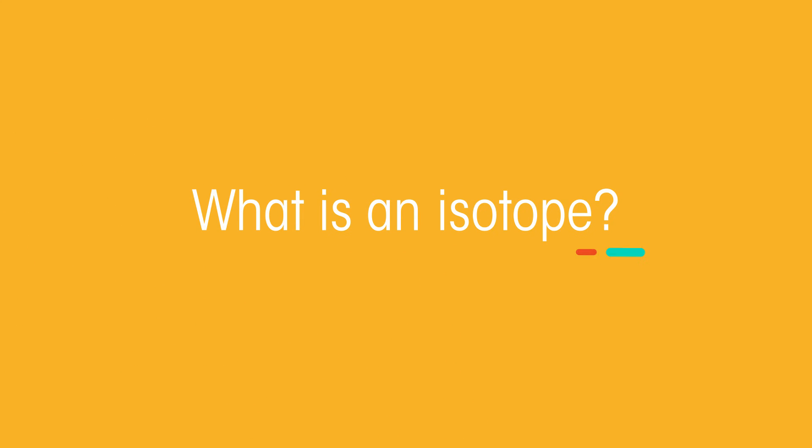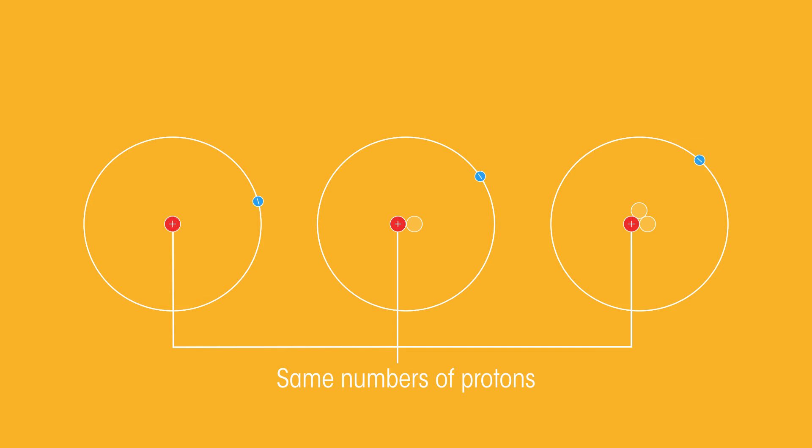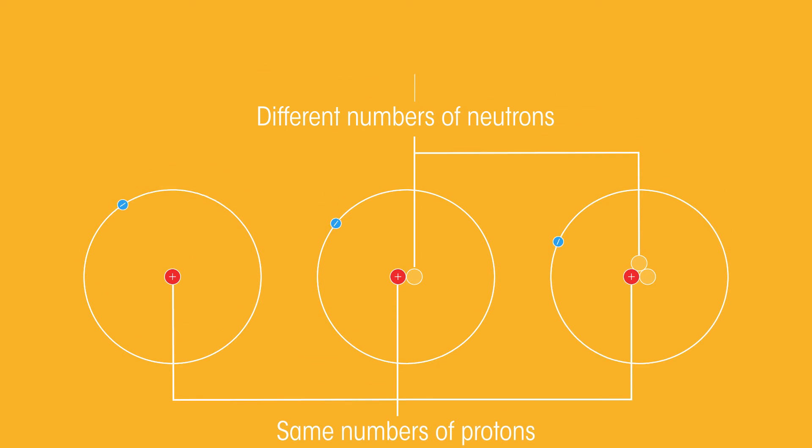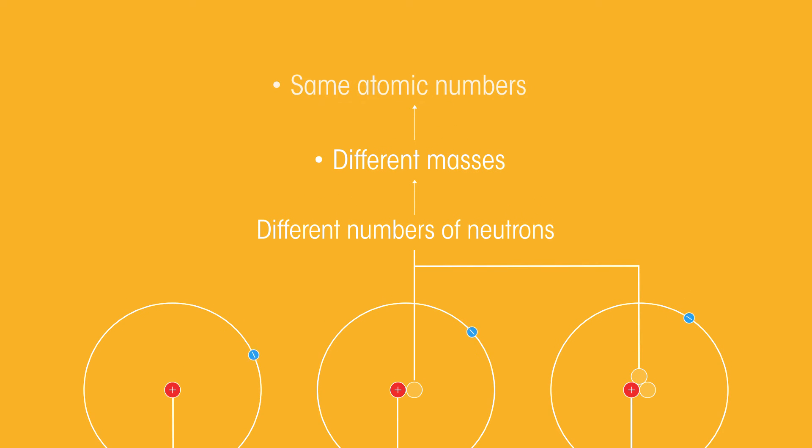Lastly, let's talk about isotopes. There are forms of elements with the same number of protons, but different numbers of neutrons. This means they have different masses, i.e. their mass numbers differ, but their atomic number stays the same.